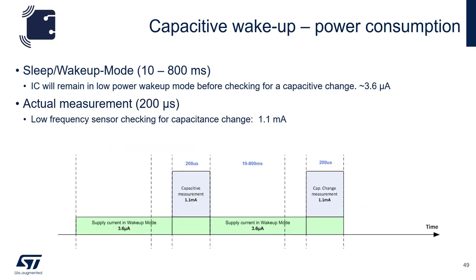Capacitive wake-up power consumption is based upon two factors. First is the sleep wake-up mode, which can be programmed from 10 to 800 milliseconds, during which the device draws about 3.6 microamps of current. Then there's the actual measurement, which takes about 200 microseconds and draws about 1.1 milliamps of current. The measurement duration is fixed, but how often you wake up is programmable.